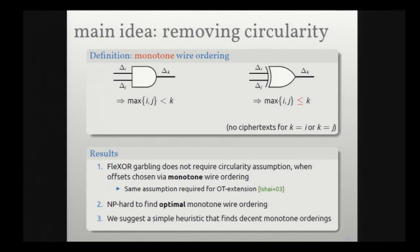If you instantiate FlexOR with a monotone wire ordering, you don't need the circularity assumption — only a weaker related-key assumption, which is the same assumption used for OT extension. So if you're already doing practical MPC, you're comfortable with that assumption. There are many wire orderings satisfying the monotonicity property; we show it's NP-hard to find the optimal one, but we have a simple heuristic that seems to perform well.